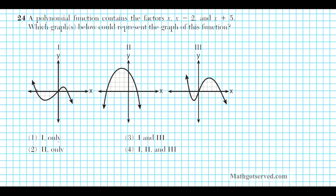Option 1 has three roots: negative 5, 0, and 2. That's a candidate because we need three roots. Option 2 has only two roots — negative 5 and 2 — so we eliminate it. Option 3 has three roots: negative 2, 0, and 5. Remember, roots are your x-intercepts, not your y-intercepts — roots are where the graph cuts the x-axis.